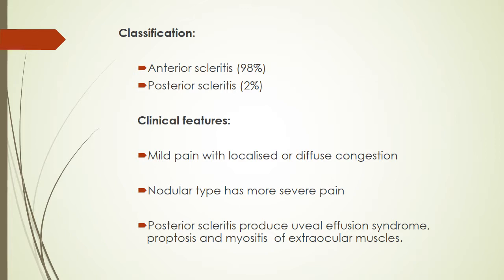Clinically, there is mild pain with localized or diffuse congestion of the anterior sclera and overlying conjunctiva. The nodular type has more severe pain and may have single or multiple nodules. In the necrotizing type, avascular patches of sclera develop and become thinned out, and such areas may undergo acute perforation occasionally.